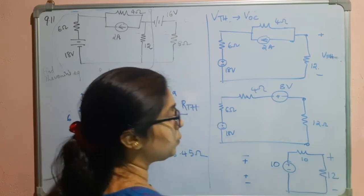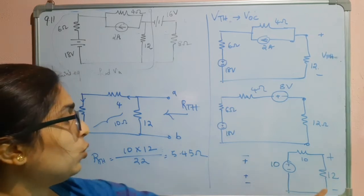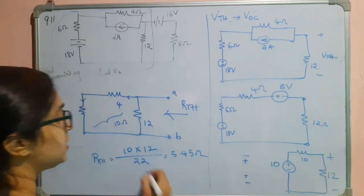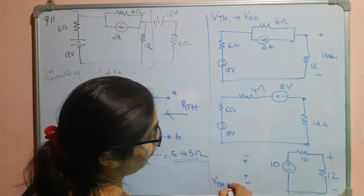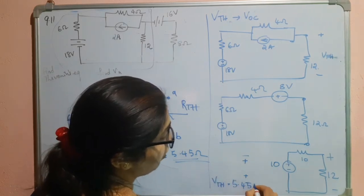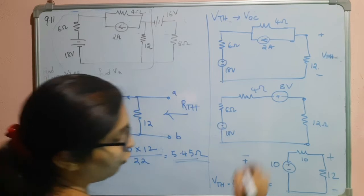So, what is this voltage? It is VTH. It is 10 into 12 divided by 10 plus 12. That is nothing but the same calculation. So, our VTH will be equal to 5.45 volts.